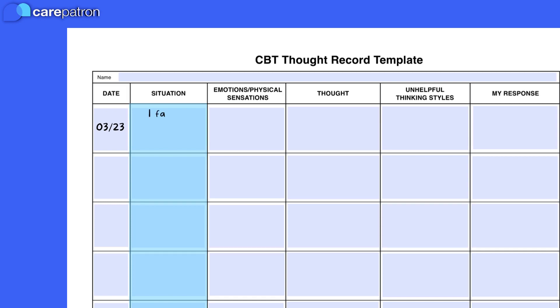The Situation column is where they should add what they were doing, who they were with, or what external factors were at play that led them to having their thought. Often, the emotional or physical reaction to a situation can inform our thoughts, or vice versa. So it's important for your client to practice acknowledging both their thought and the emotional or physical response.